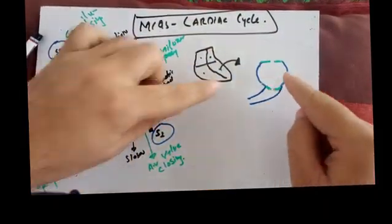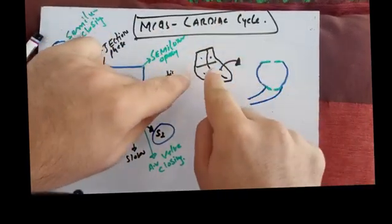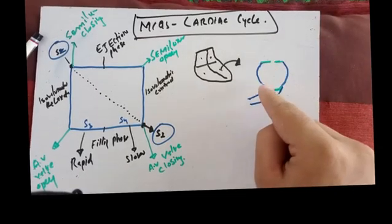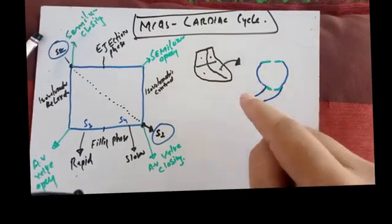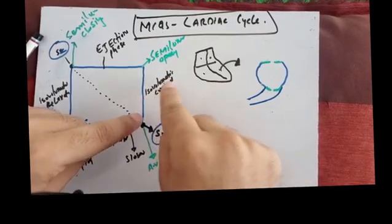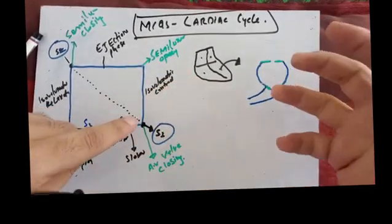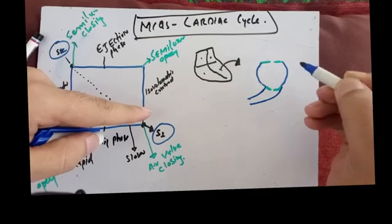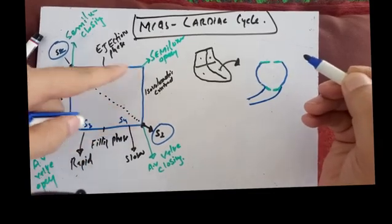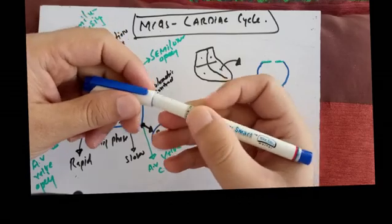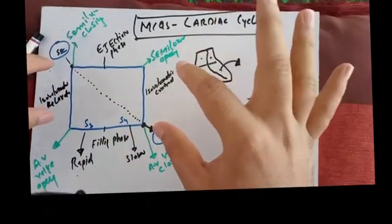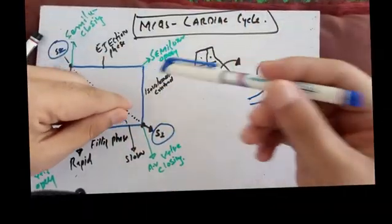We start the cycle from the left ventricle. The left ventricle has the mitral valve and the aortic valve. Starting from here, there is isovolumetric contraction, meaning both valves are closed. An MCQ asks: in which phase of the cycle are both valves closed? The answer is isovolumetric contraction as well as isovolumetric relaxation — in both conditions, both valves are closed.